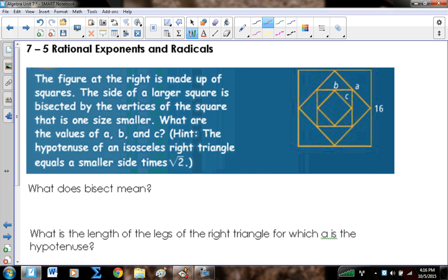We start with a figure that's a square. It says the side of a larger square is bisected by the vertices of the square that is one size smaller. What are the values of a, b, and c? The hint says the hypotenuse of an isosceles right triangle equals a smaller side times radical 2. I don't think we need to go into all that detail though. What does bisect mean? Bisect means it's cut into two equal parts. So in this case, the vertices of the square are cutting it into two equal parts.